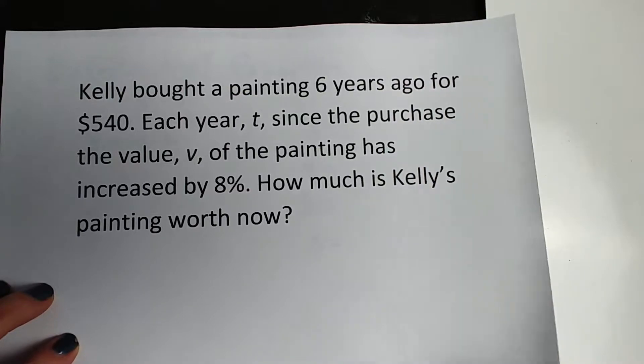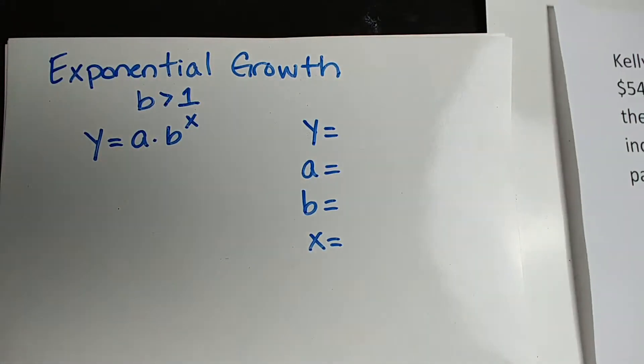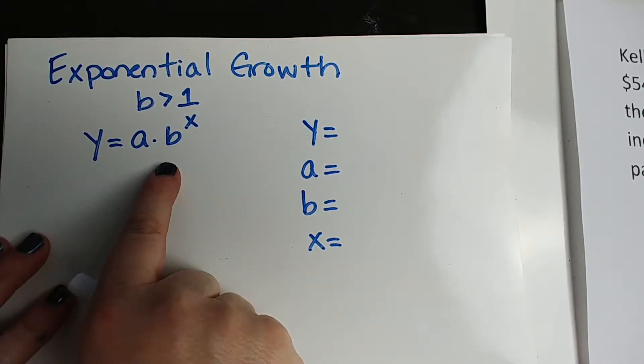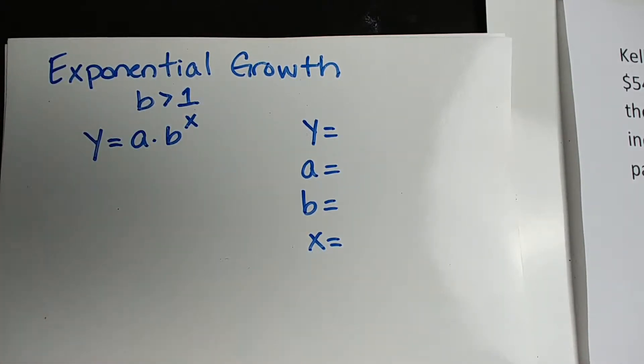The first thing we're going to do is look at our formula for exponential growth. Now, this is actually the same formula for decay. If B is greater than 1, then it is growth. If B is less than 1, it is decay.